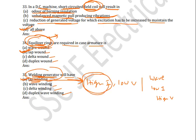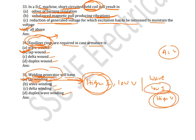In wave winding, only two parallel paths exist — number of parallel paths equals two. That is why wave winding is used for more voltage and low current applications. In a welding generator, we use lap winding for getting higher current.